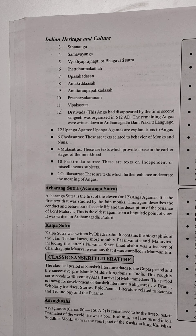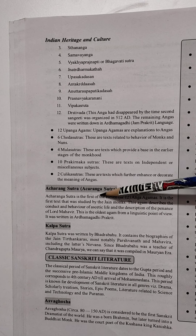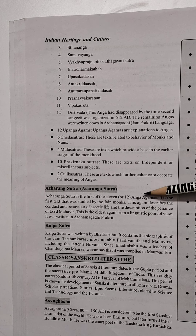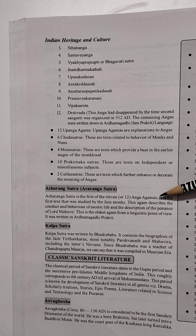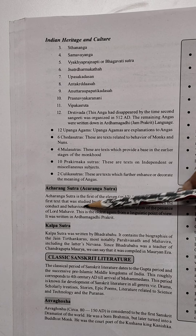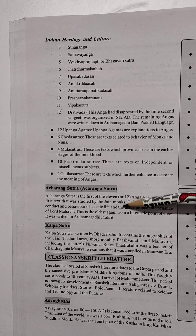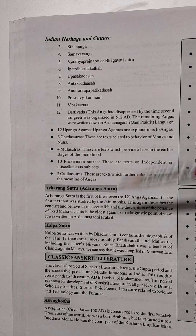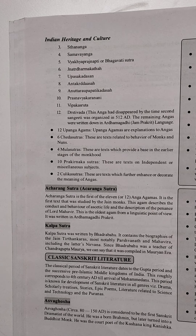The Acharang Sutra is the first of the 11 or 12 Agams. It is the first text studied by Jain monks seeking Moksha. This Agam describes the conduct and behaviour of the ascetic life and includes descriptions of the penance of Lord Mahavira.